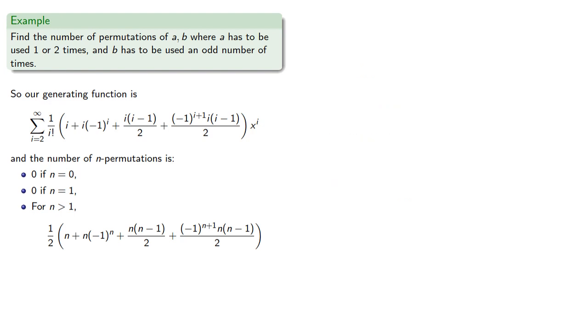So let's pick a random number. How about 4? And so the 4 permutations, a has to be used 1 or 2 times. So if we use a one time, we get abbb, babb, bbab, and bbba.